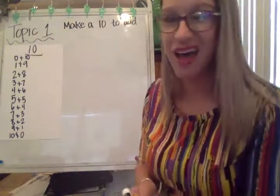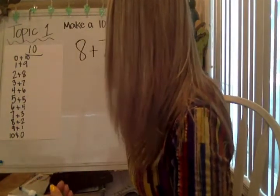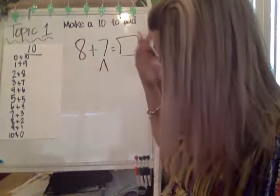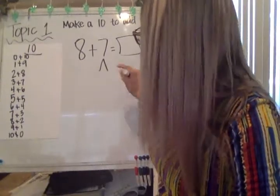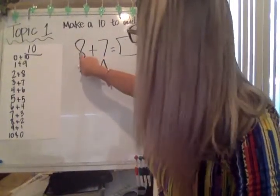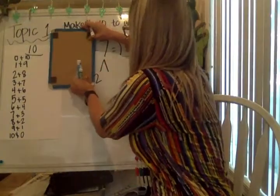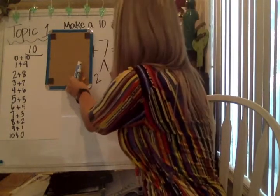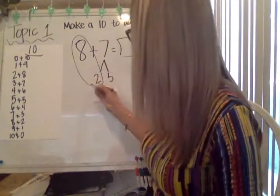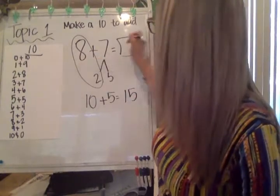You'll get to the point where you can do a lot of this in your head, and that's the goal. Having this 10 chart memorized is step number one. Step number two is to practice these problems a lot, and then you'll be able to do more of this inside your head. Let's try eight plus seven and make a 10 to add. Eight means two to get to the next 10, so two plus something equals seven — the missing number is five. My new equation is eight plus two, which is 10, and then I need to add the five. So 10 plus five is 15 — eight plus seven is 15.